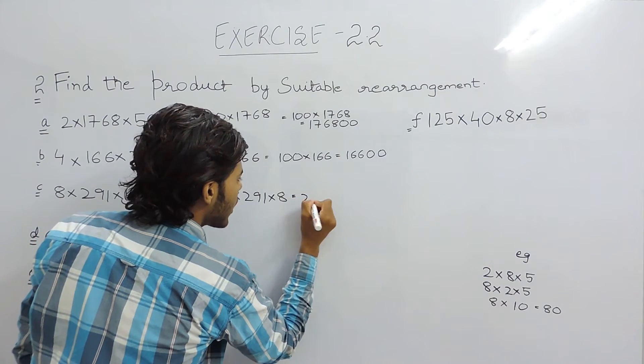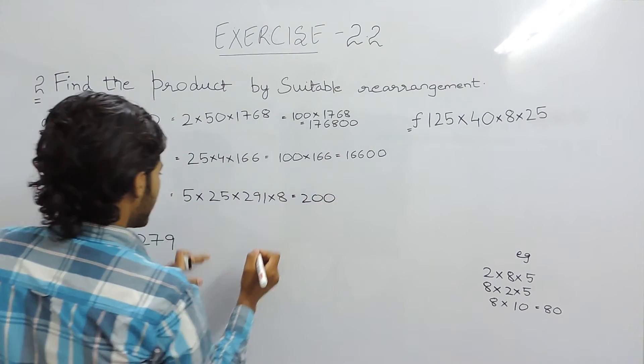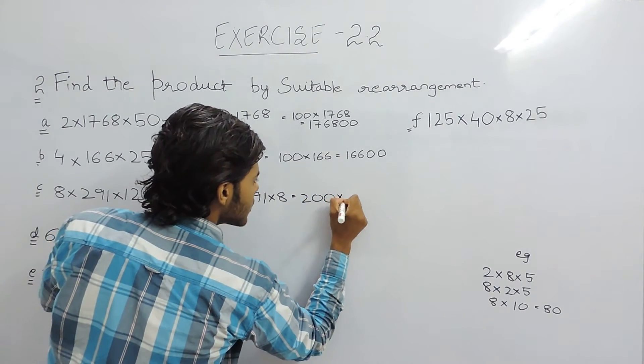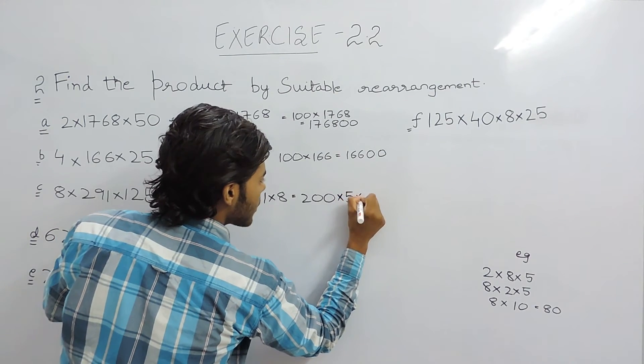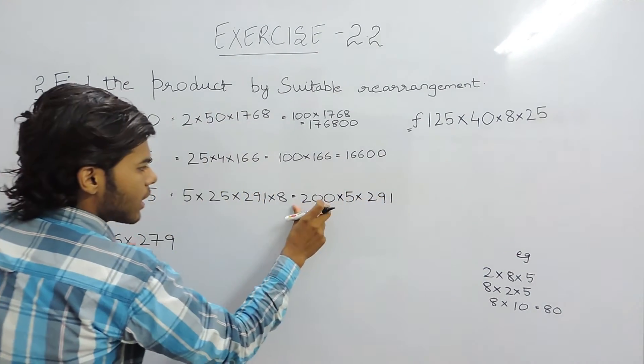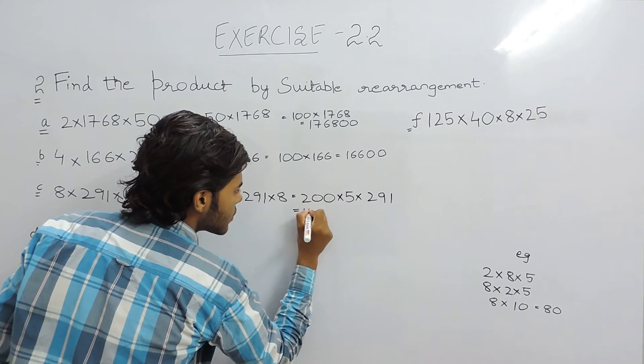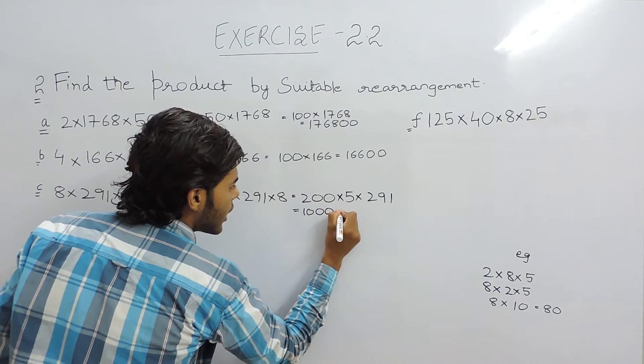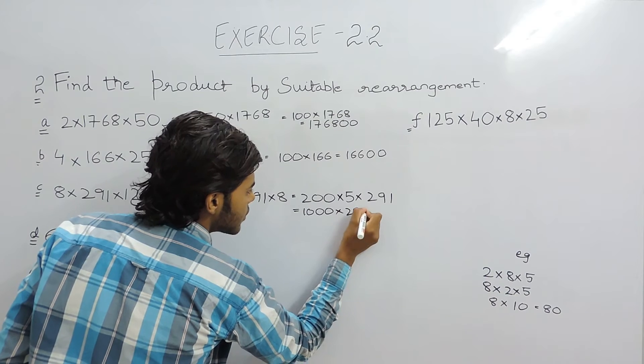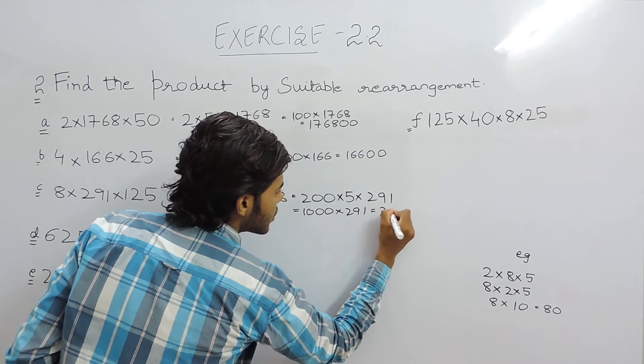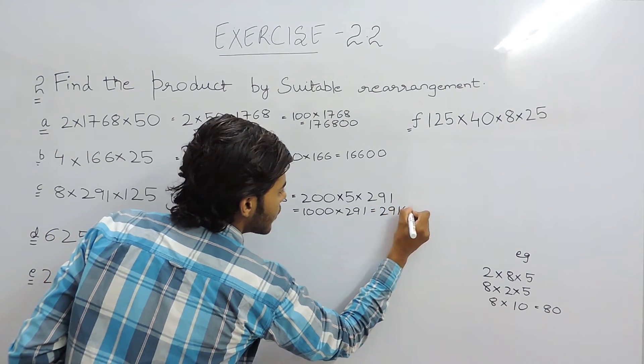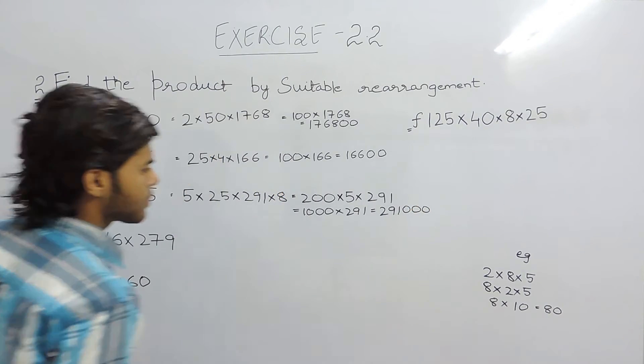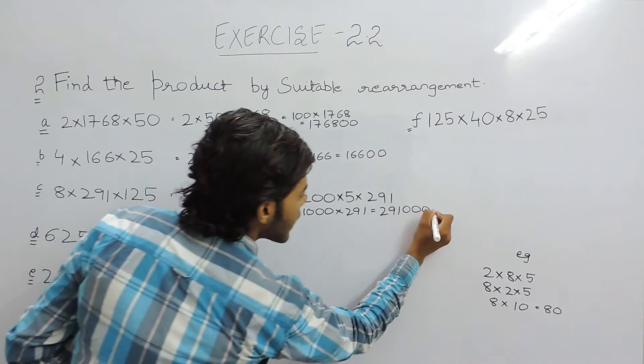So this will be 200, 5 as it is and 291 as it is. So 5 two's are 10 means 1000 into 291 which will give you 291000. This is the third answer.